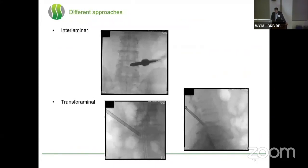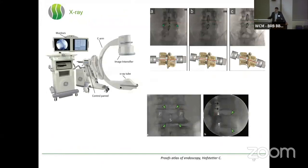Both approaches have different advantages and disadvantages, but for all of these techniques we need an X-ray. Of course, the smaller the incision gets, the more you have to pay attention that you don't accept problems on the X-ray — you have to be centered. You need a good view on the interlaminar window. I always try to correct the table before correcting the angulation of the X-ray, which makes it a little easier to manipulate.